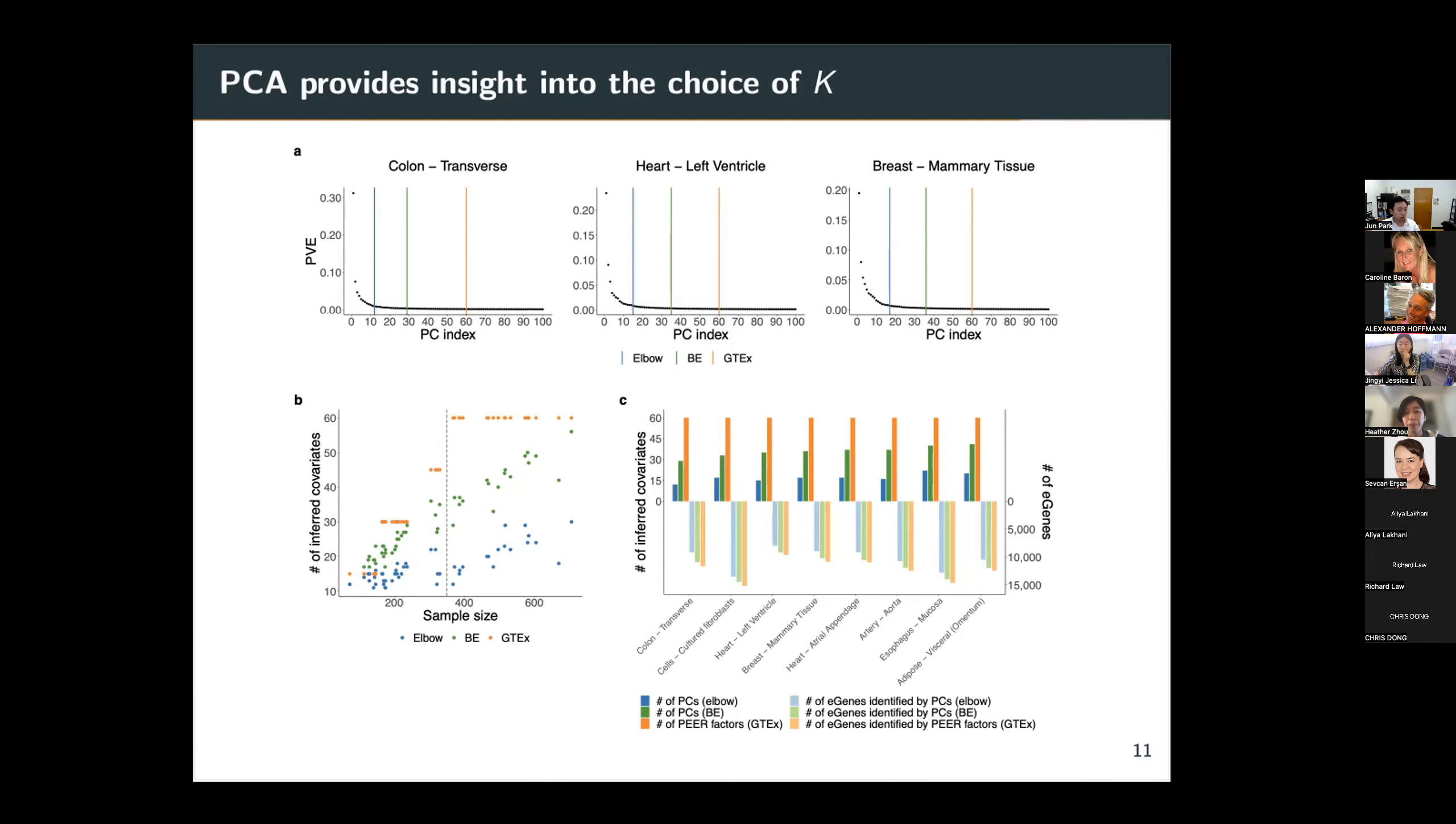So in contrast, PEER and HCP do not provide convenient ways of choosing K. And empirically, practitioners often choose K for PEER and HCP by maximizing their number of discoveries. So they run the same pipeline with different numbers of PEER factors, for example, and then choose the number of PEER factors that maximizes their number of discoveries. So here we show via the GTEx EQTL dataset that this way of choosing the number of PEER factors may be inappropriate.